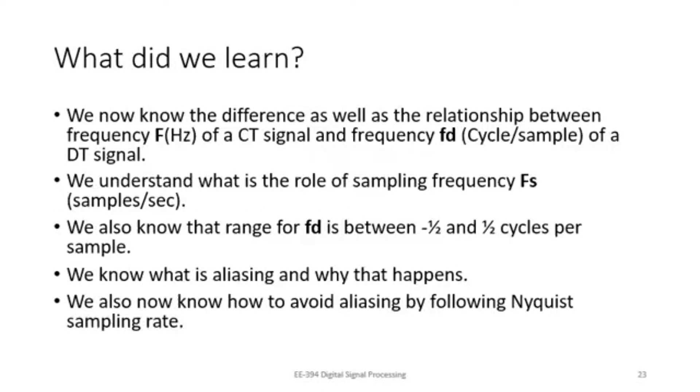And so, in summary, what did we learn in this video? First of all, we now very clearly know the relationship between the frequency of a continuous time signal f, which is measured in hertz, and the frequency fd, which is the frequency of a discrete time signal. It is measured in cycles per sample, and the relationship of these two, f and fd, with the sampling frequency fs, which is measured in samples per second. And we have also looked at the frequency, which informs us what can be the maximum frequency present in the continuous time signal, what can be the minimum sampling frequency if you want to sample the signal correctly. And we now know that the range of fd is between minus half and half, and what happens if we go beyond this range.